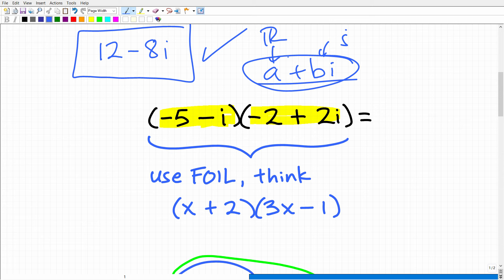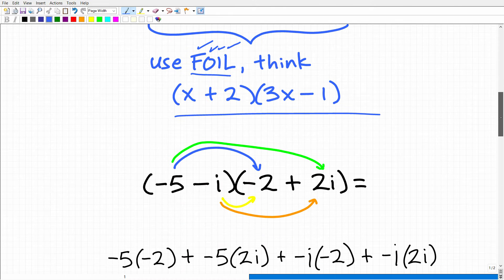So when we're multiplying complex numbers, you want to think of FOIL. Remember, first, outer, inner, last. This is our basic algebra stuff that we use when we multiply two binomials like this. So this is how we are going to multiply these complex numbers. So let's do that right now.